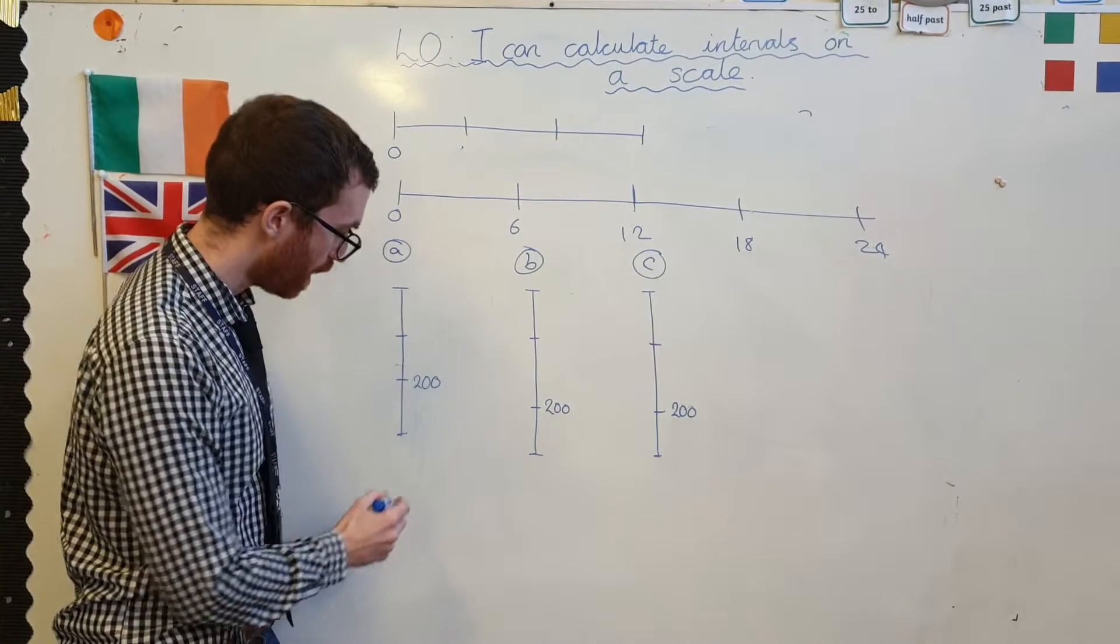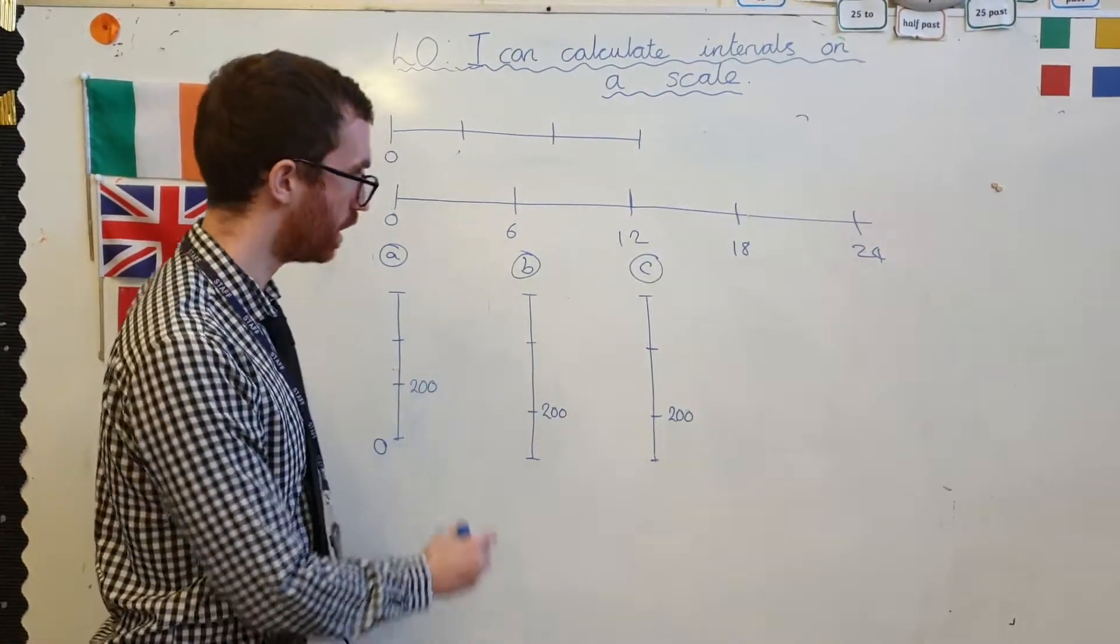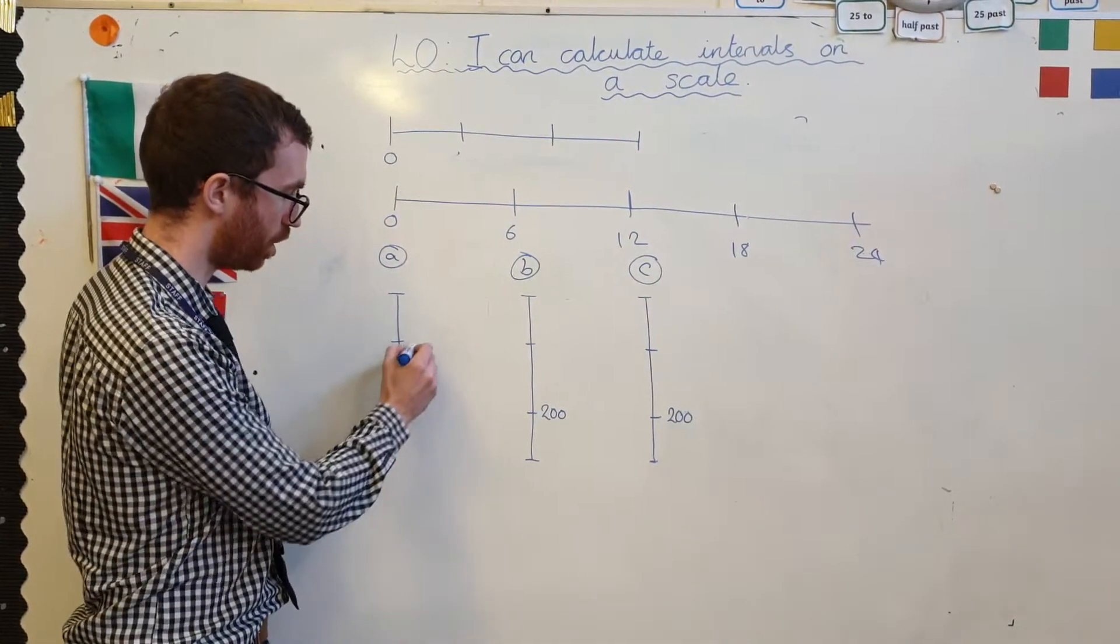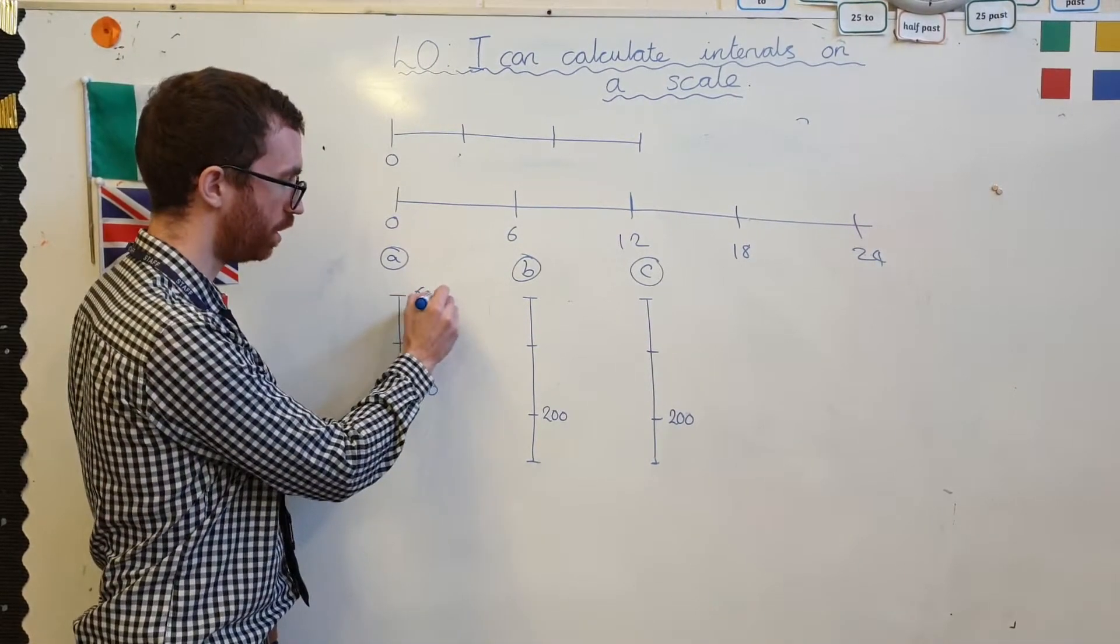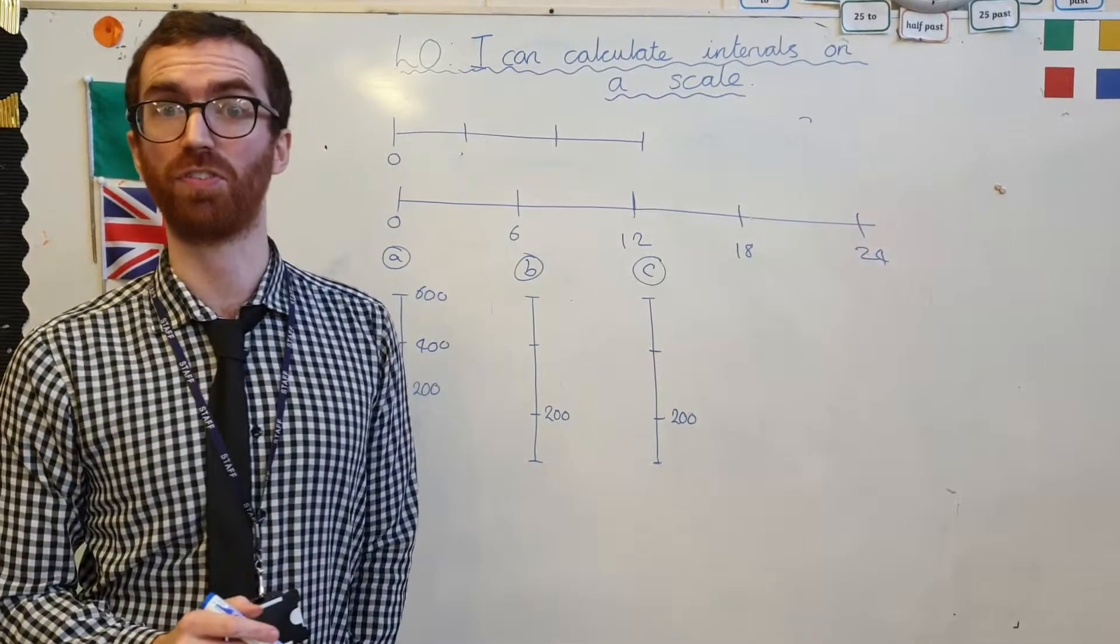Alright, let's have a look. Well, if this bottom point had been 0, that would have meant that each of these jumps is 200. That would be 400, making that one 600. Yeah, that one's fine, isn't it?